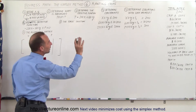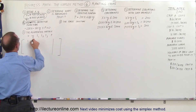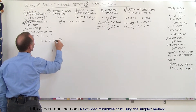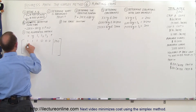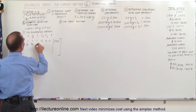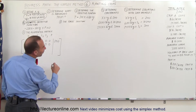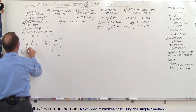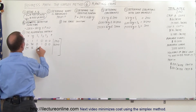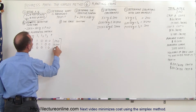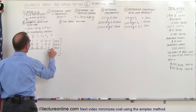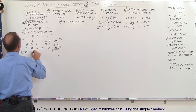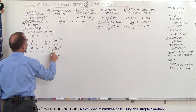Putting down only the coefficients: the first equation gives 1, 1, 1, 0, 0, 0, and 200. The second equation gives 60, 76, 0, 1, 0, 0, and 10,200. The third gives 24, 16, 0, 0, 1, 0, and 3,000. Then drawing the line, the objective function row is minus 200, minus 160, 0, 0, 0, 1, and 0.